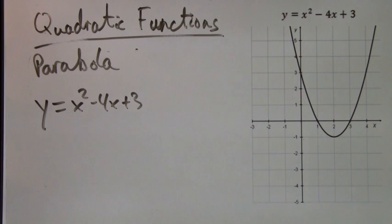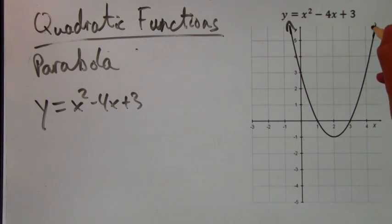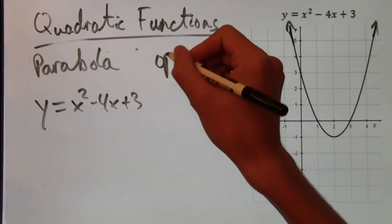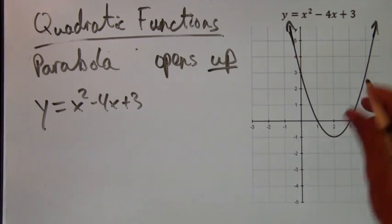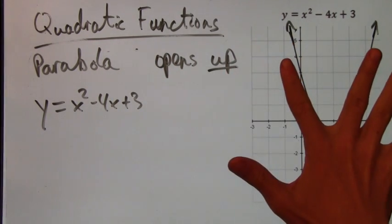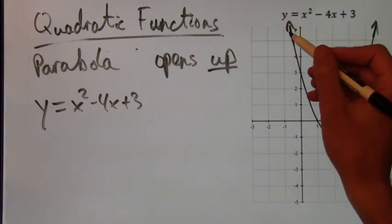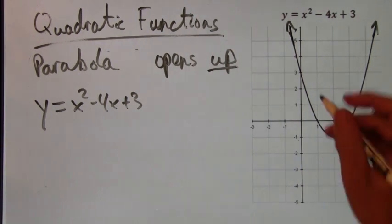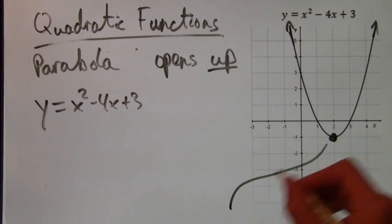Now another important property of quadratics is that they can open upwards or open downwards. This one opens up. This is because the arrows that I've just drawn on, where the parabola continues on, it all goes up. Also, all parabolas have what's called a vertex. It's this point where the parabola curves and turns around.